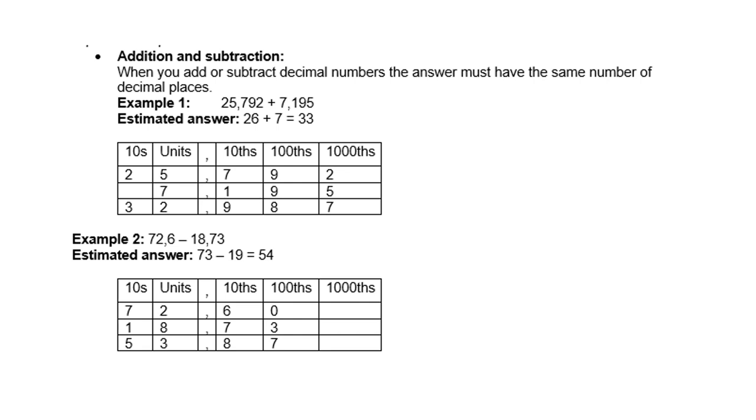So now you have 15 minus 7, which is 8. Again, by the 2, there's only 1 left. Let's go borrow from the 7, so there's 6 left. So you have now 11 minus 8, which is 3. And of course, 6 minus 1 is 5.